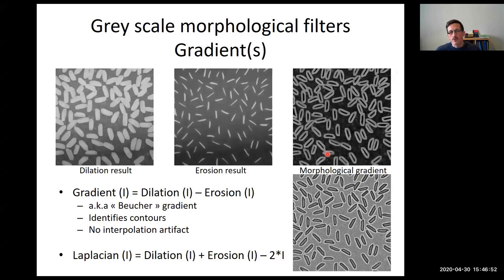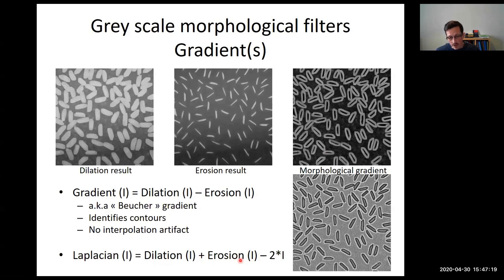Another use of morphological filters is to extract gradients at the boundaries of structures. Combining dilation with erosion produces a morphological gradient, which can be used in subsequent filters. There is also a morphological equivalent of the Laplacian, obtained by combining erosion, dilation, and the original image, which can be useful to detect bright or dark spots within the image.